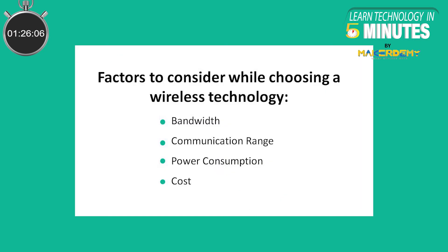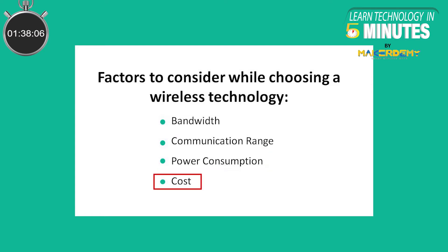Having understood this, let us now look at some factors that you should consider while selecting a wireless technology. While making a choice of a wireless protocol, you are making a trade-off between the bandwidth, range, power and cost. While the bandwidth and range are decided based on the application, the cost and power consumption must be minimized as much as possible. So, based on these parameters, let us now proceed to understand which wireless protocol to use in different scenarios.